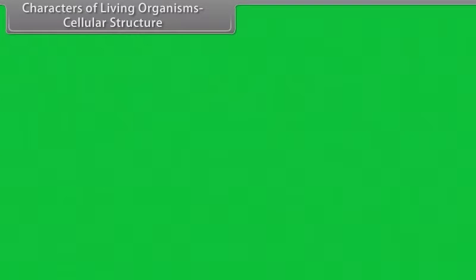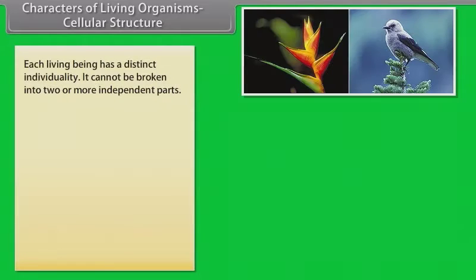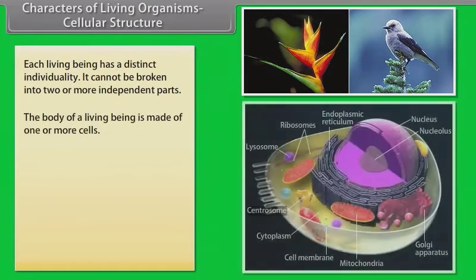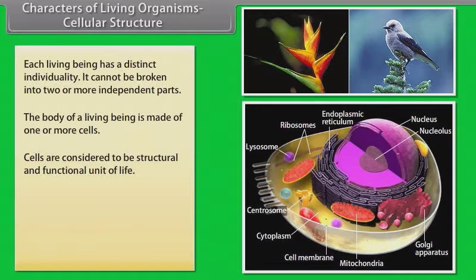Cellular structure: Each living being has a distinct individuality. It can be broken into two or more independent parts. The body of a living being is made of one or more cells.